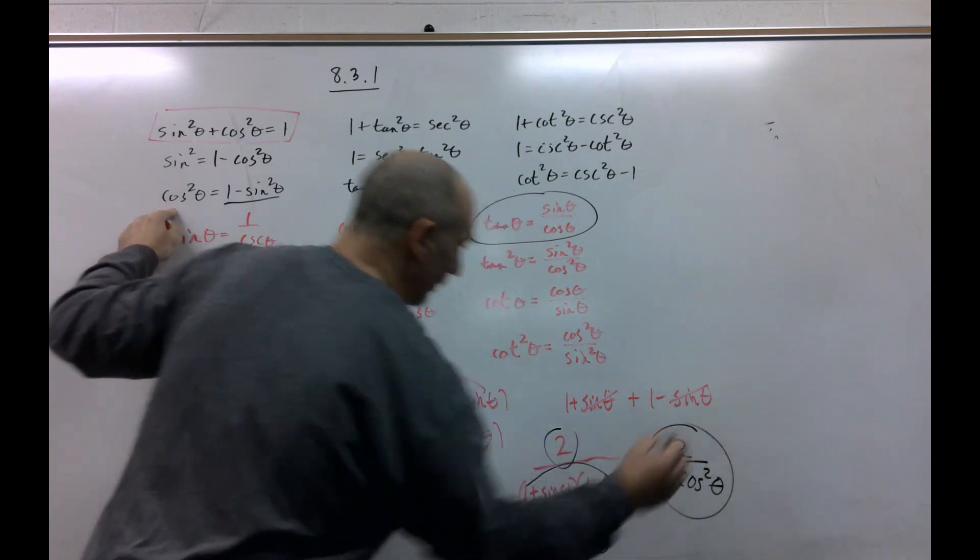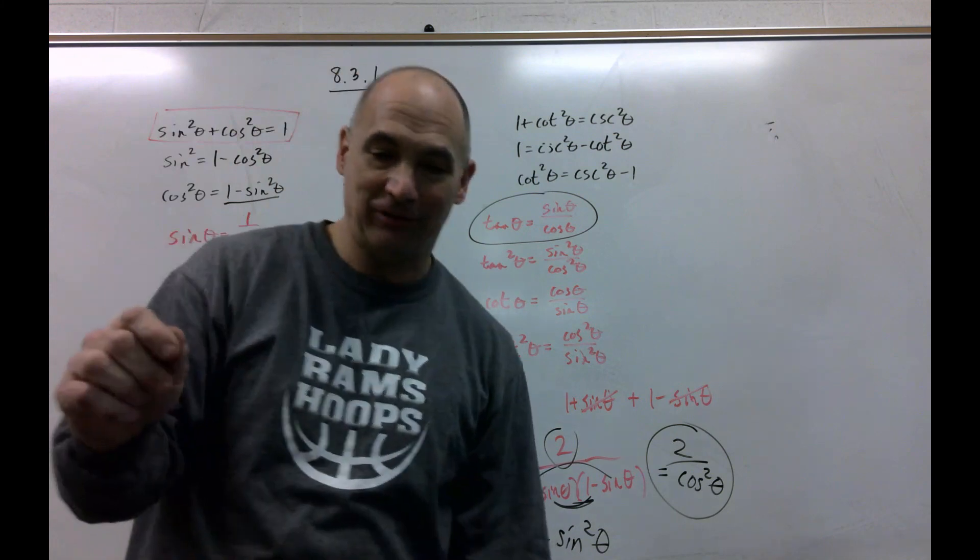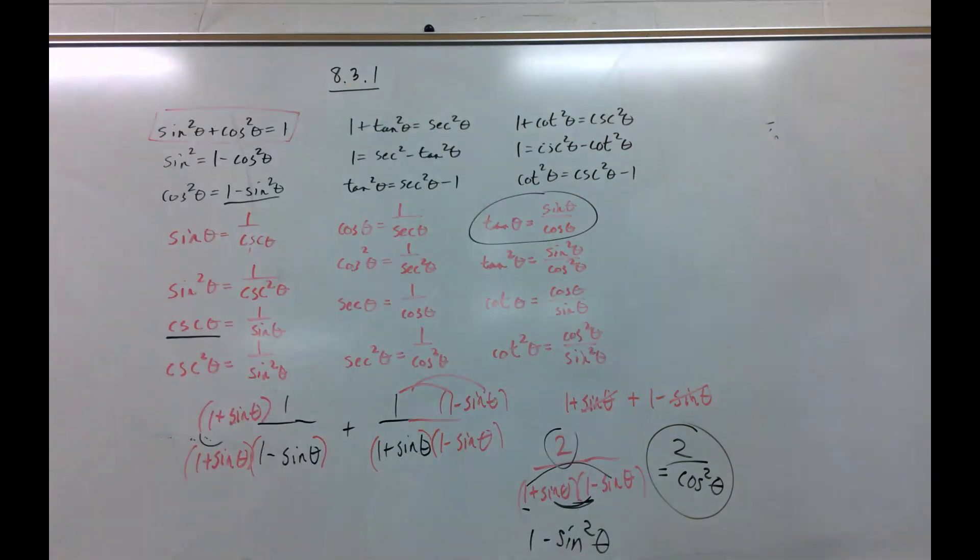Well, that two comes along for the ride. What is this? Well, one minus sine squared theta is actually cosine squared, so I get cosine squared theta, and that's done. Challenging? Yes, especially if you've never seen it before. So, let me pause it, and I got one or two more things to show you.